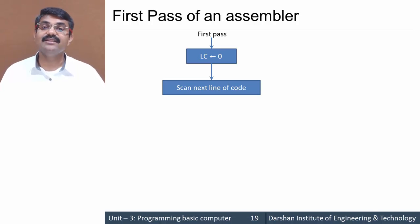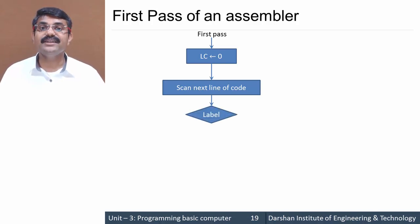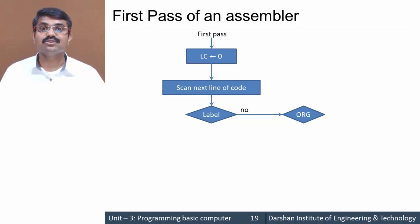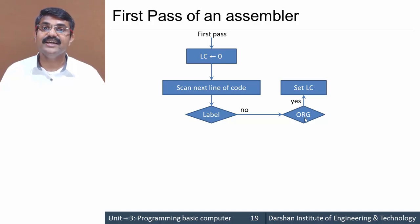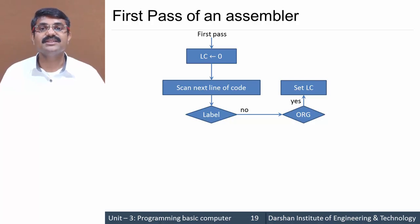We then check whether the scanned line of code is a label. If it is not a label, we check whether it is ORG — a pseudo instruction discussed earlier. If it is ORG, we set the location counter to the address specified in ORG, because in ORG we write some address that we are supposed to set to the location counter. After setting the LC, we scan the next line of code.